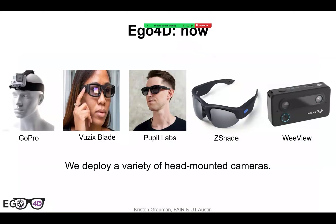In Ego4D there's a variety of different cameras, all head-mounted. A lot of it is GoPro, which has the advantage of being tilted toward where all the interesting hand-object activity is happening, but there are also cameras looking straight out like V6 or C-shade, and even some stereo data with WeView. Diversifying cameras means a big resource not overfit to a single device, with variety across battery life, field of view, and other properties.